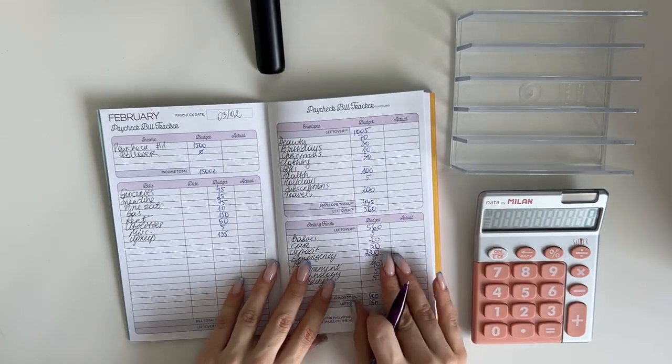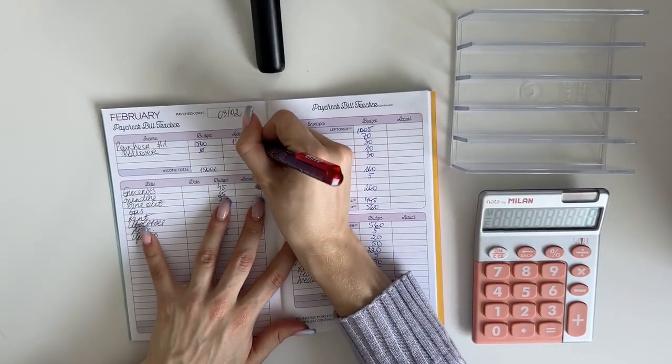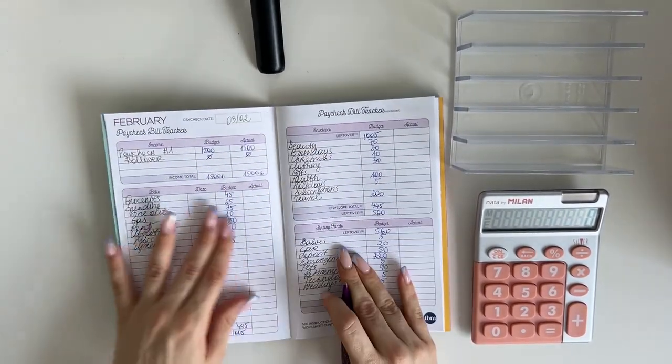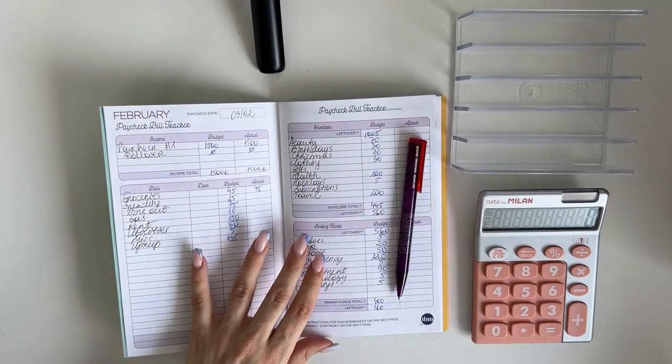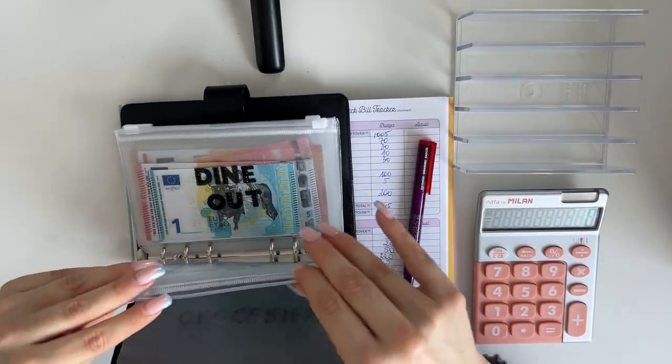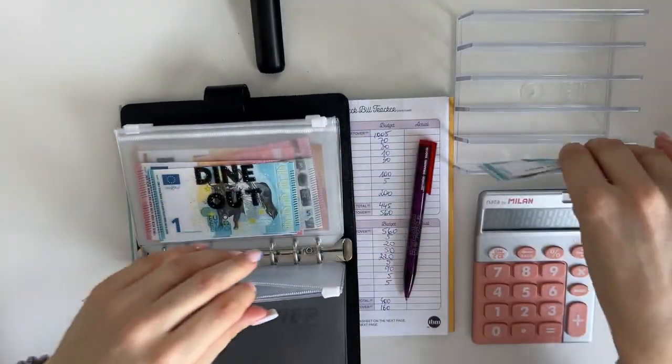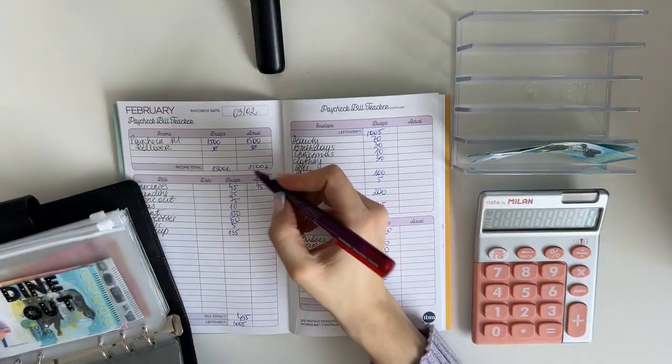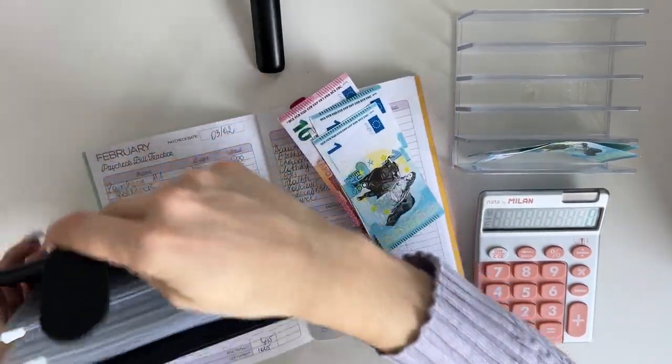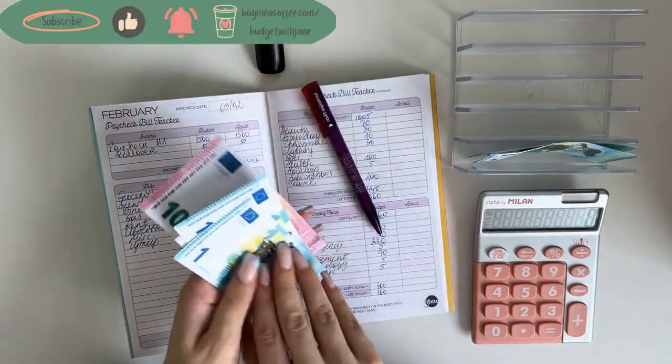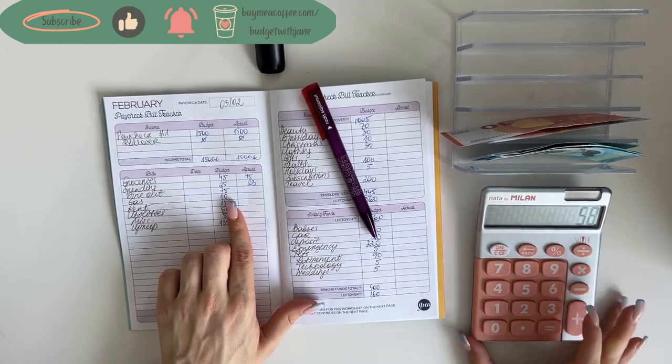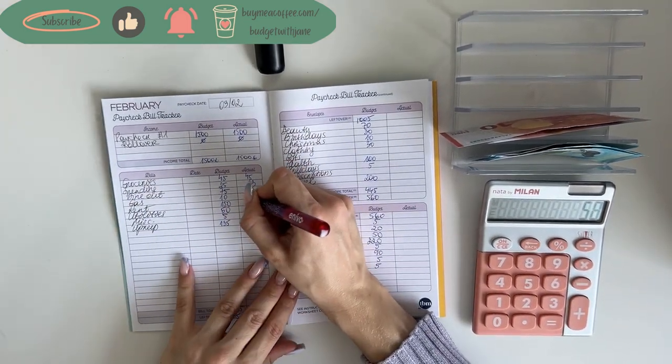The actual income was 1,500, no rollover, that's what we worked with. So groceries, I know we actually spent 45. Spending has a rollover, let's check, that means we spent 23. And dine out has a rollover of 17, so 75 minus 17, we spent 58.